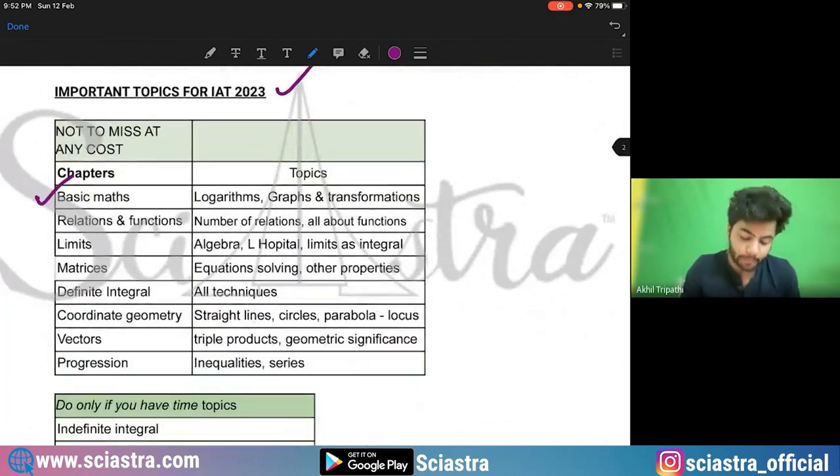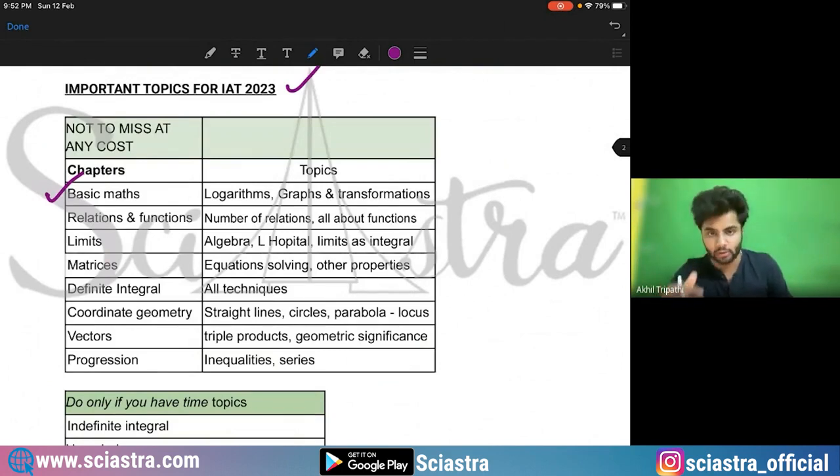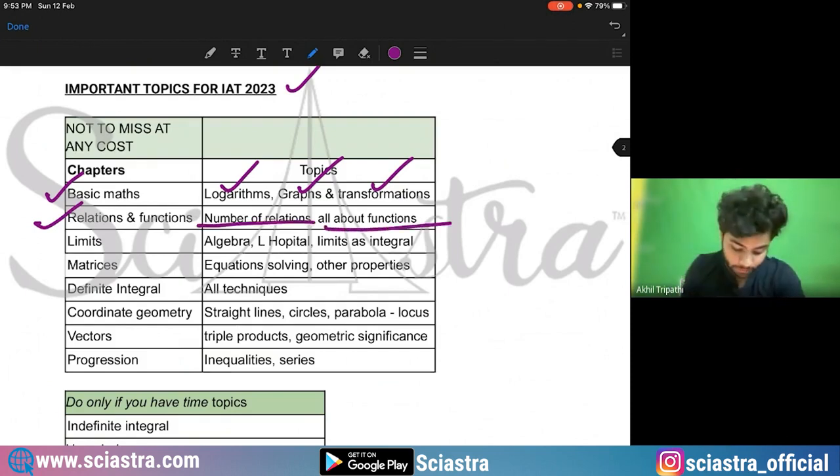First is basic math. This is for IAT. For NEST also I will tell. So first is the basic math chapter logarithms, graphs and transformations, then comes relations and functions. So question from number of relations and everything about function is important. Coming to the limits, so algebra of limits, L'Hospital rule, limits as integral are very important topics.